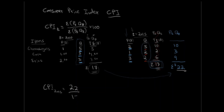Our CPI in 2015 is the summation of price today times quantity base, over the summation of price base times quantity base, times 100. That works out to 22 over 17 times 100, giving us 129.41.